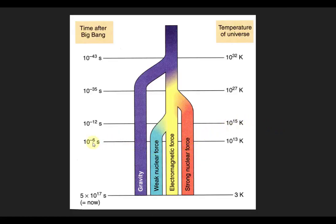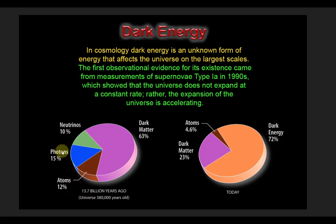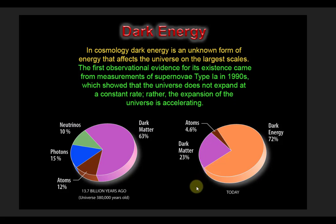We're now going to have all four forces split from each other. A millionth of a second has passed into the history of the universe. The Big Bang event is approximately 13.7 to 13.8 billion years ago. At this point, the constituents of the universe are: 12% atoms, 15% photons, 10% neutrinos, and 63% dark matter. Dark matter is the energy that is contained within space itself. Today, this has changed — dark energy, which is the energy within empty space, constitutes 72% of the entire mass or energy of the universe. Atoms are only 4.6%, and dark matter approximately 23% of the mass of the entire universe.